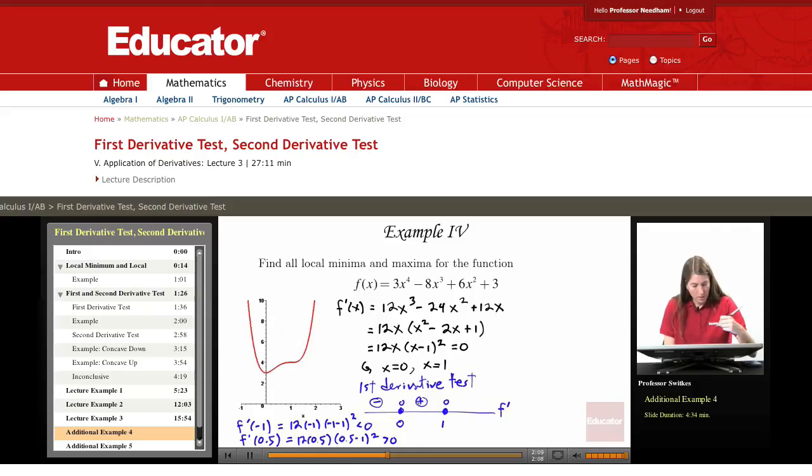And f prime of 2, something past 1, would be 12 times 2 times 2 minus 1 squared, which is also positive. And so we're getting a situation in which we have negative slope, 0 slope, positive slope, a local minimum at x equals 0.